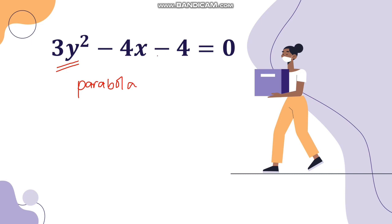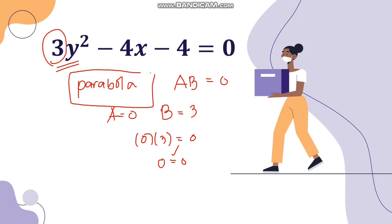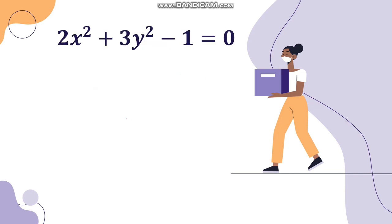Using the A and B method for a parabola, AB should equal 0. Since there is no X squared, A equals 0, and B equals 3. Multiplying 0 and 3 gives 0, confirming that this general equation represents a parabola.